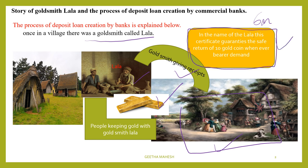The receipt may look like this — you can see: in the name of Lala, this certificate guarantees the safe return of ten gold coins whenever the bearer demands. Here, 'bearer' means whoever owns this receipt. Whoever gives this receipt to Lala will receive ten gold coins. This is what we call the paper receipt that Lala used to issue whenever villagers made a deposit with him.